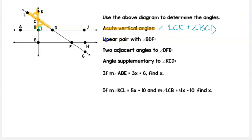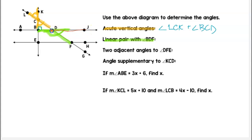Next we want to find a linear pair with angle BDF. We want the adjacent angle that forms a line with BDF, so if we take one side and extend it we get our straight line linear pair. The other angle here is angle JDF. There is another linear pair to BDF, so feel free to stop and figure that one out before moving on.